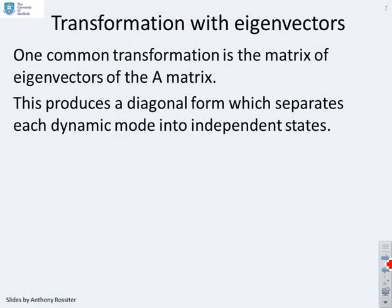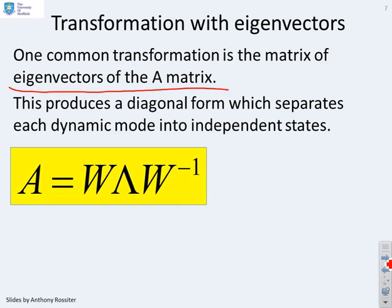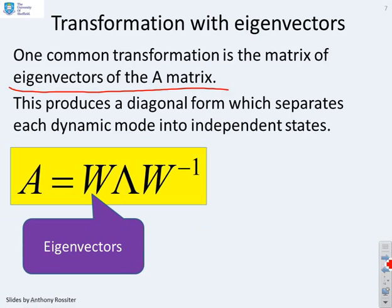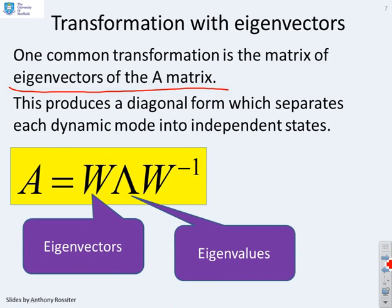Eigenvalues and eigenvectors. A common transformation to use, that is for this matrix T, is the matrix of eigenvectors of the A matrix. And if we do this, it produces a diagonal form which separates each dynamic mode into independent states. In simple terms, if you write A as this expansion here, the matrix of eigenvectors times a diagonal matrix of eigenvalues times the inverse of the matrix of eigenvectors. It's easy to show that this is a generic relationship as long as you don't have repeated roots.